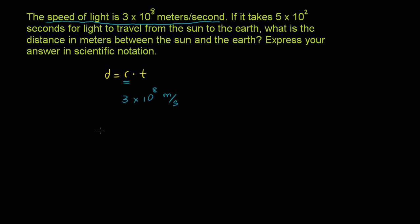And then what is the time? They say if it takes 5 times 10 to the second seconds for light to travel from the sun to the earth. So the time right there is going to be times 5 times 10 squared seconds. And they want to say, what's the distance in meters? So I just take the product of these two things. The distance is just going to be the product of 3 times 10 to the eighth and 5 times 10 squared.